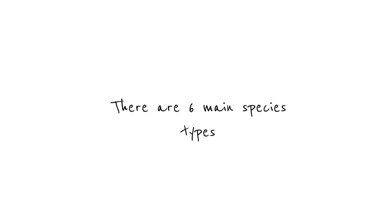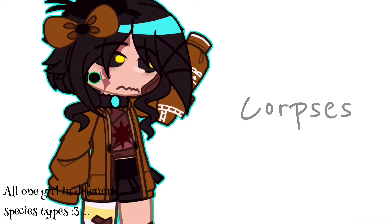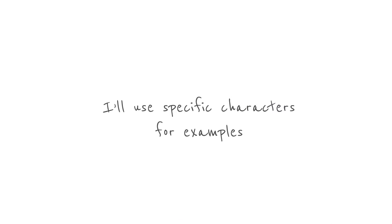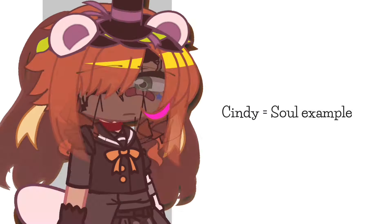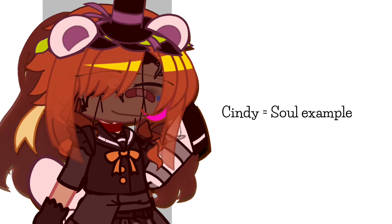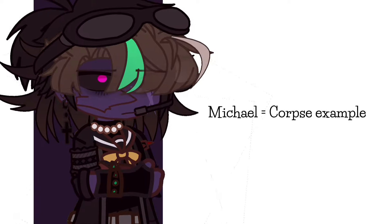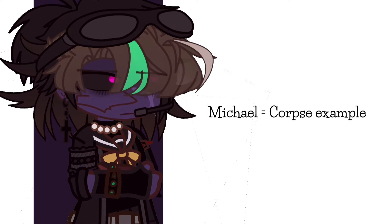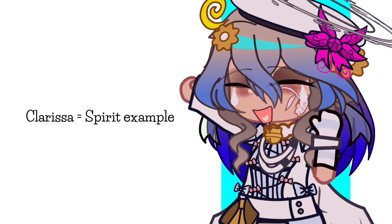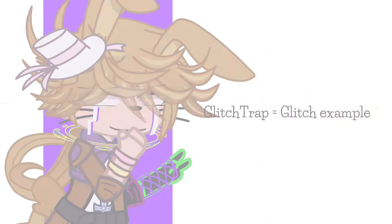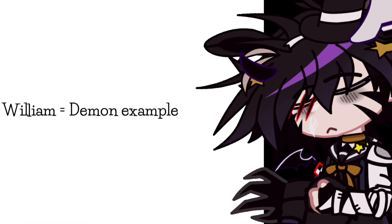There are 6 main species types: Souls, Ghosts, Corpses, Spirits, Demons, and Glitches. I'll use specific characters for examples. Cindy is the example for souls. Henry is the example for ghosts. Michael is the example for corpses. Clarissa is the example for spirits. Glitchtrap is the example for glitches. And William is the example for demons.